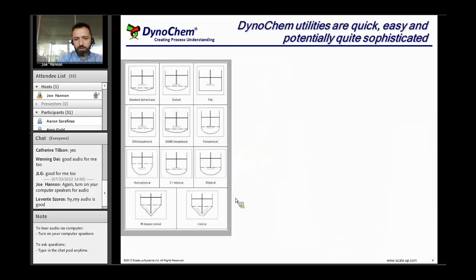At the other end of the spectrum in terms of practicality, you have the tools I'm going to concentrate on in today's session, which are the DynoChem utilities: mixing utilities and heat transfer utilities. These are quick and easy to use, as you'll see shortly, and they are also potentially quite sophisticated. You can do some quite subtle things and calculate some quite subtle characteristics with these tools.